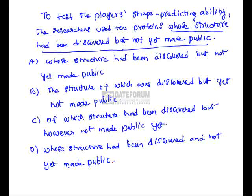There are two contrasting events: one is it was discovered yet it is not made public. So A is a probable answer. B: the structure of which was discovered but yet not made public - this is a very awkward sentence. Though both the words are used as conjunctions without any proper connection to the sentence, but yet - both mean same here in this sentence. So therefore B is not correct, grammatical error.